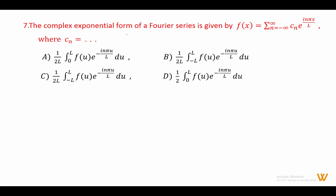Seven: the complex exponential form of Fourier series is given by fx equals sigma, n from minus infinity to plus infinity, of cn e raised to i n pi x upon l, where cn equals 1 upon 2l, integration from minus l to plus l of f(u) e raised to minus i n pi u upon l du. Answer is option C.